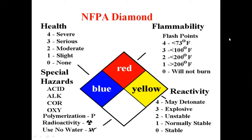The yellow section indicates reactivity. If the number is 0, the chemical is stable. If it is 1, it is normally stable. If it is 2, it is unstable. If it is 3, it is explosive. If it is 4, it will detonate.